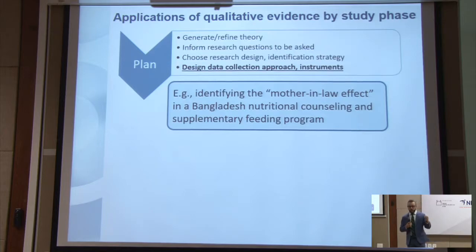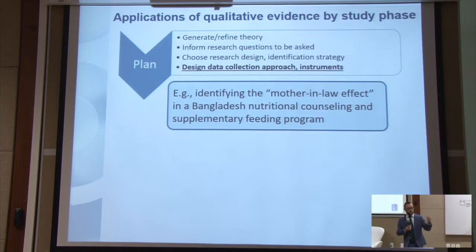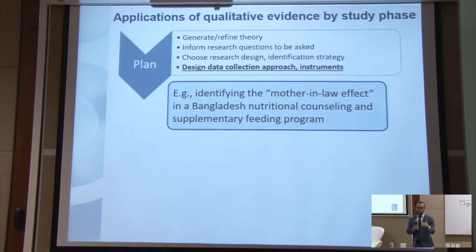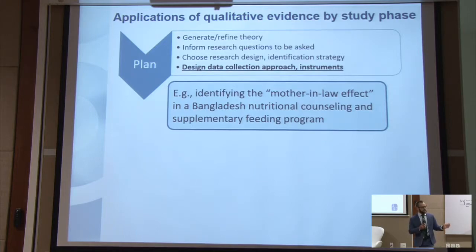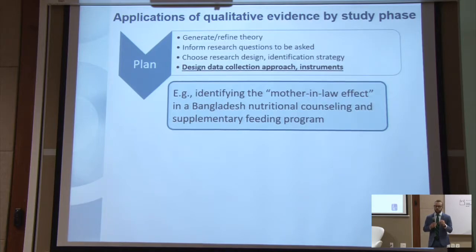These researchers understood that there may be a very important difference in households where there is a mother-in-law versus households where there is no mother-in-law, because their targeting — the intervention targeting was going straight to just the mothers. The mother-in-laws were not targeted. So what they did was they designed their data collection instruments for their household survey to make sure that they had very clearly differentiated the relationships between household members, so they could identify all the households in which there is a mother-in-law.